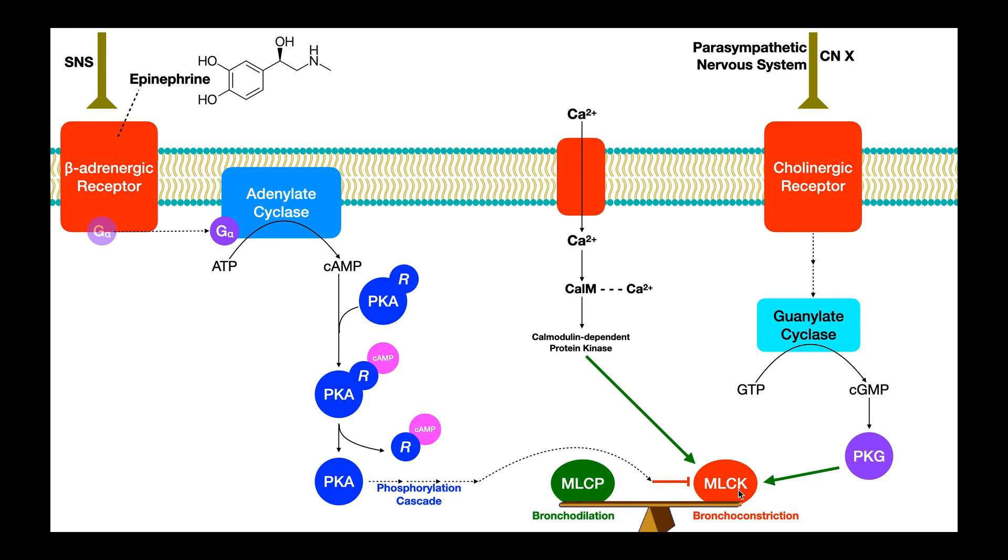Either way, they activate this enzyme, which produces contraction of the smooth muscle and therefore constriction. And so we have a really strong balancing act here between bronchodilation and bronchoconstriction. And the major way that this is regulated through these pathways is through either activation or inhibition of myosin light chain kinase.